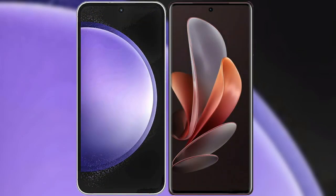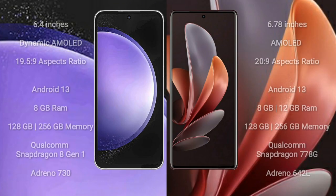I will compare the new Samsung Galaxy S23 FE with vivo V29. Samsung Galaxy S23 FE comes with a 6.4-inch dynamic AMOLED display and aspect ratio 19.5:9. vivo V29 comes with a 6.78-inch AMOLED display and aspect ratio 20:9.